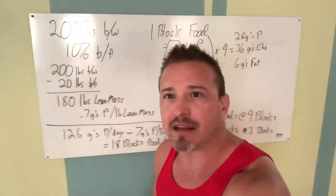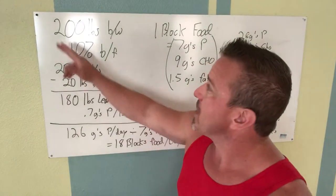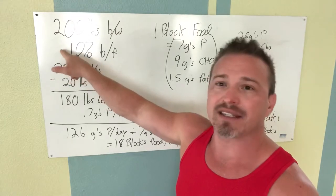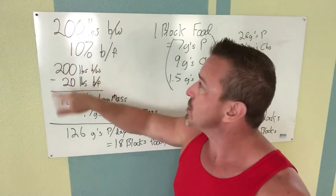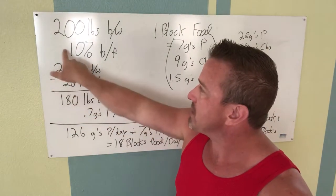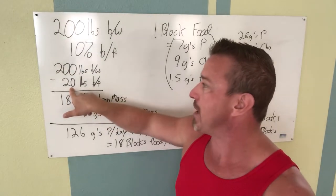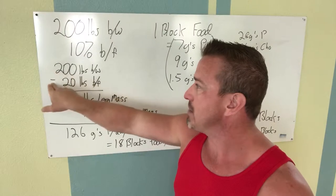Let's say we have a 200 pound athlete, and this athlete has 10 percent body fat. That means 200 pounds, 10 percent of 200 pounds is going to be 20 pounds. So he has 20 pounds of body fat.